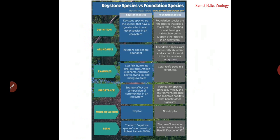Foundation species are the species that play a major role in creating a habitat or community, and they support other species in the ecosystem. Foundation species are numerically abundant, while keystone species are least abundant in a particular ecosystem. Examples of keystone species include starfishes, hummingbirds, sea otters, African elephants, beavers, and flying foxes, while foundation species include coral reefs, trees in a forest, and kelps in marine ecosystems.